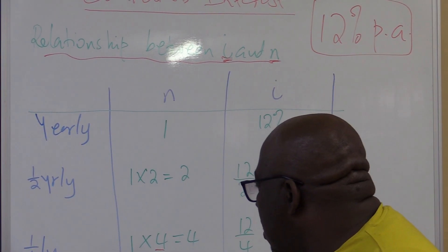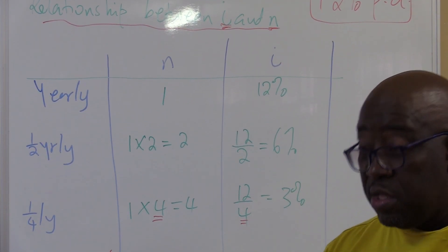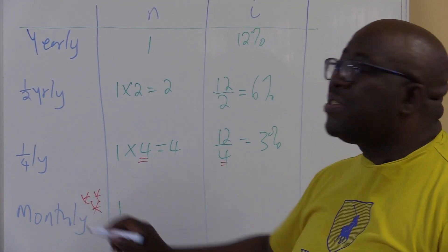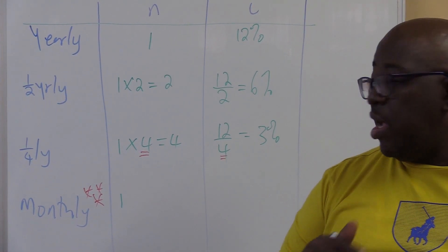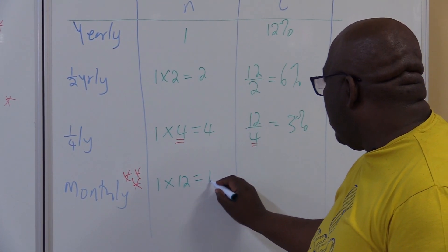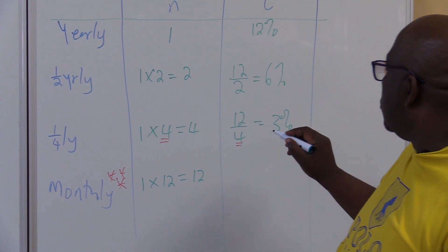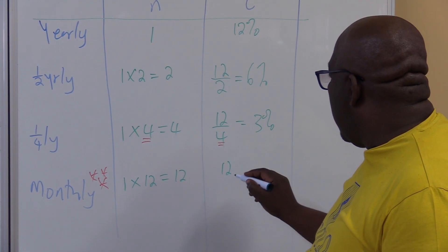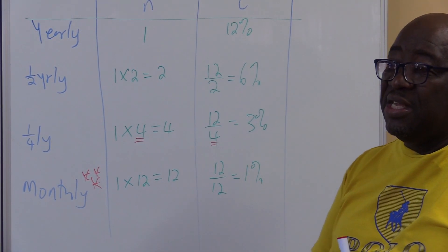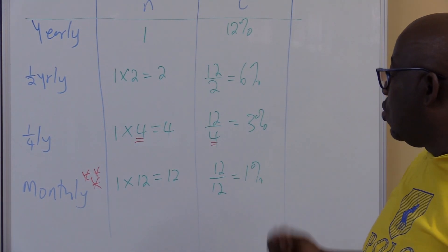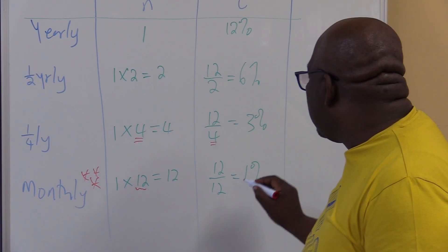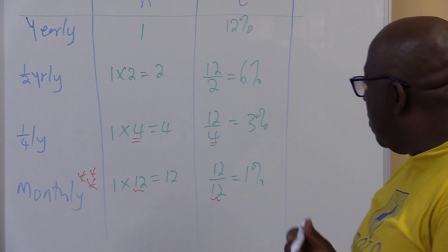You will use monthly compounding a lot in financial mathematics. When you say the interest is compounded monthly, how many months do we have in one year? We have 12 months. So you multiply N by 12, giving 1 × 12 = 12 compounding periods. What happens to i? It was 12% — divide it by 12 to get 1% every month. So in 12 months you have that 12% per annum. If you multiply N by 12, you divide i by 12.